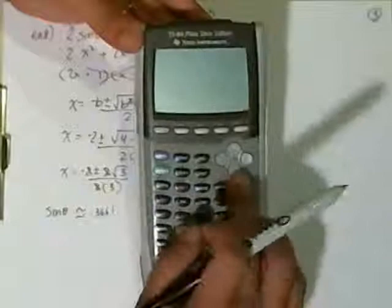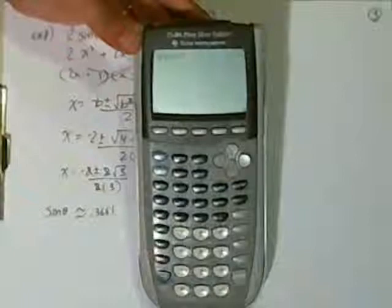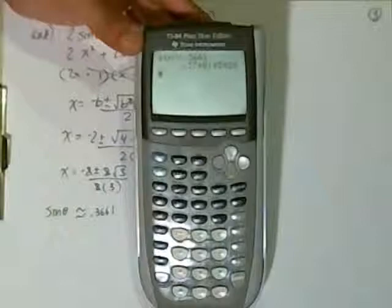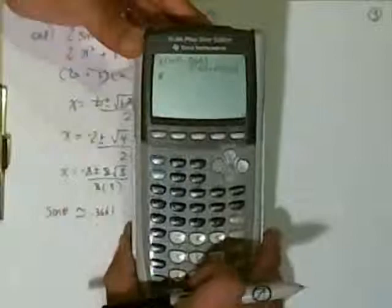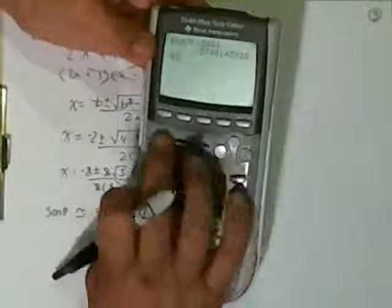To find this angle, I'm going to do the sine inverse of 0.3661. It's going to be approximately 0.3748. Do they want it in degrees? Oh, they want it in degrees. Excuse me.